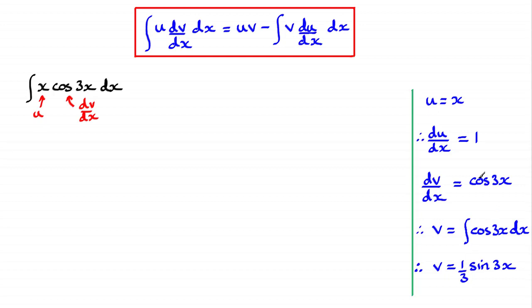So we just need to pop these values into our formula here. So when it comes to the first part u times v it becomes this part times the integral of this part. That's what uv is. And so you've got this result: u as x times the integral of the other part which is the v, 1 third sine 3x.